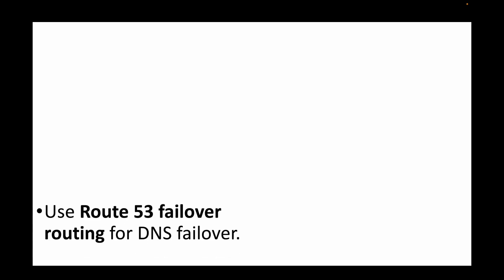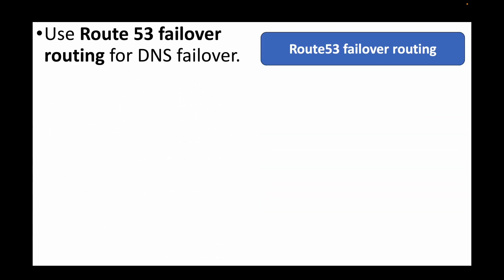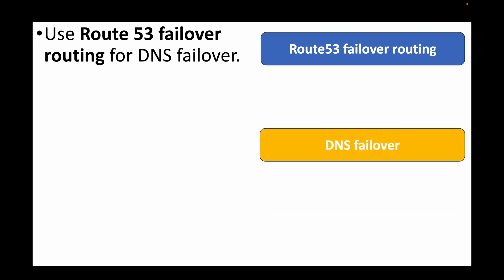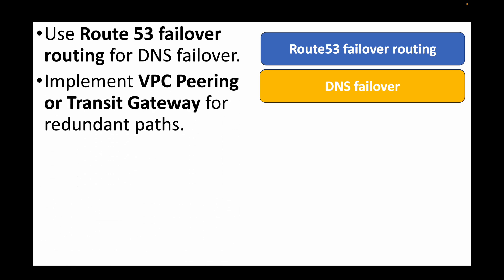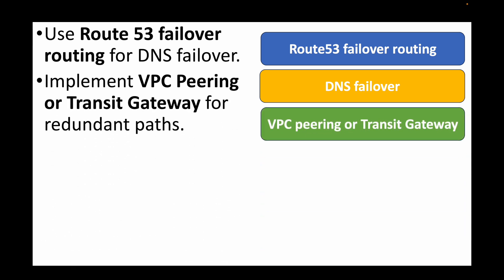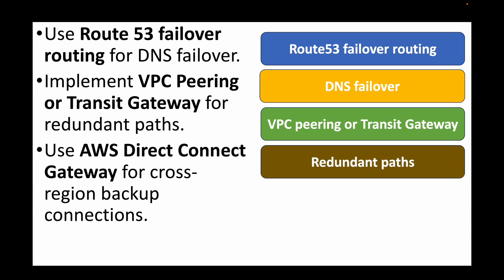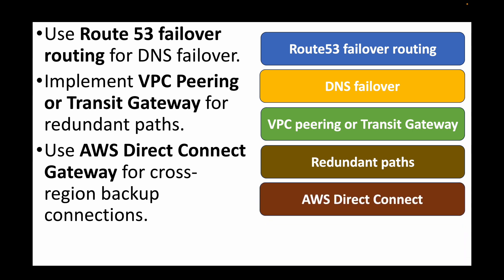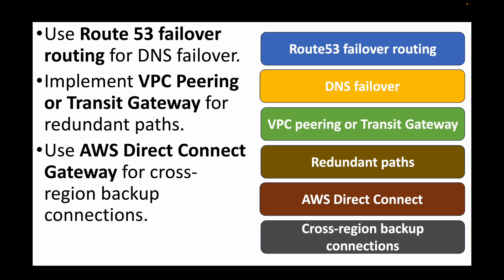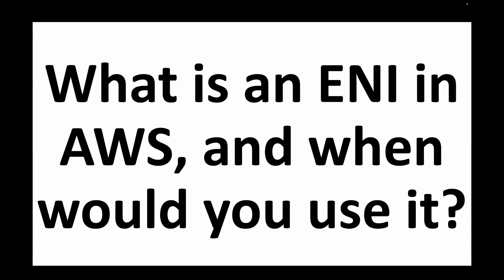The next question is: how do you implement disaster recovery for AWS networking? You can use Route 53 for DNS failover, Transit Gateway or peering connections for redundant paths, and Direct Connect Gateway for cross-region high-speed backup connections. These tools can be used when setting up disaster recovery for your networking infrastructure.